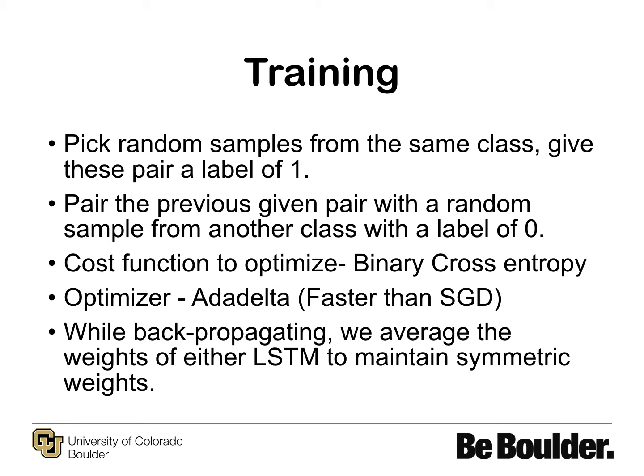To train this model, we pick random samples from a given class and give this pair a label of 1. Then we pair this current data sample with another sample from a different class and give it a label of 0. Since this is a classification task, the cost function we choose is binary cross entropy and the optimizer is AdaDelta. The only trick here is while backpropagating, we average the weights of both LSTMs and then backpropagate to maintain the symmetric weights between either LSTM.